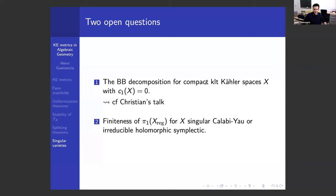The second open question is computing the fundamental group of the regular parts of the pieces appearing in the singular Beauville-Bogomolov decomposition. Conjecturally, as in the smooth case, the fundamental group should be finite — but this is mainly open as of now. I just want to finish on those two questions. Thank you for your attention.